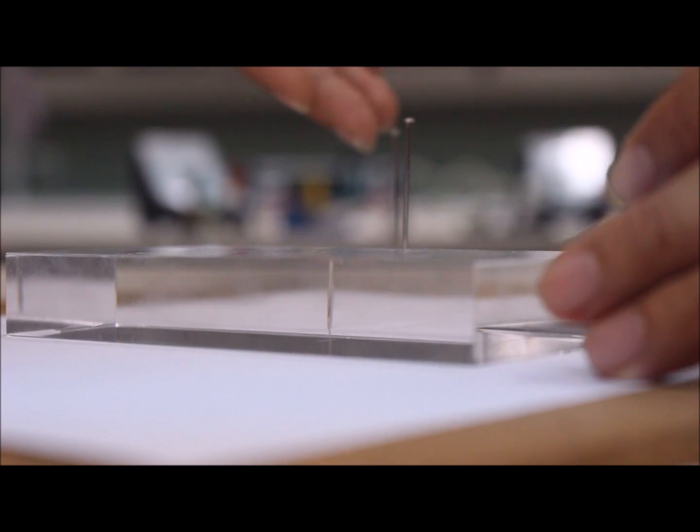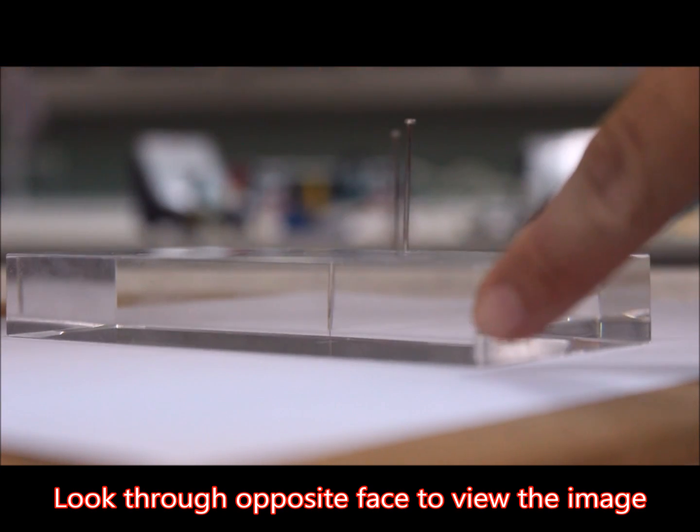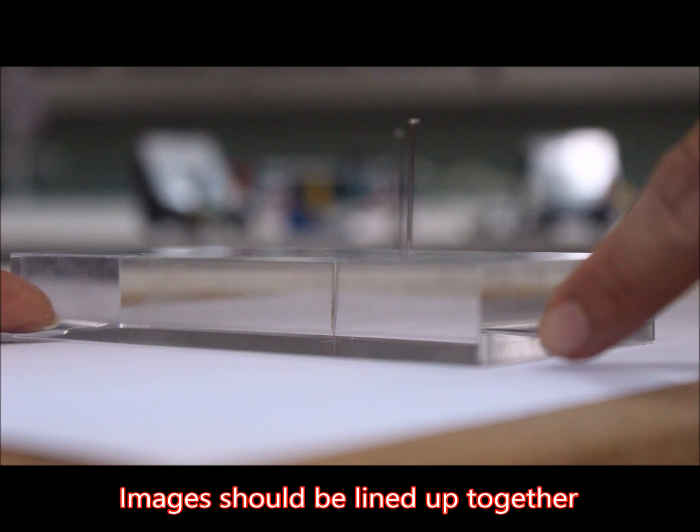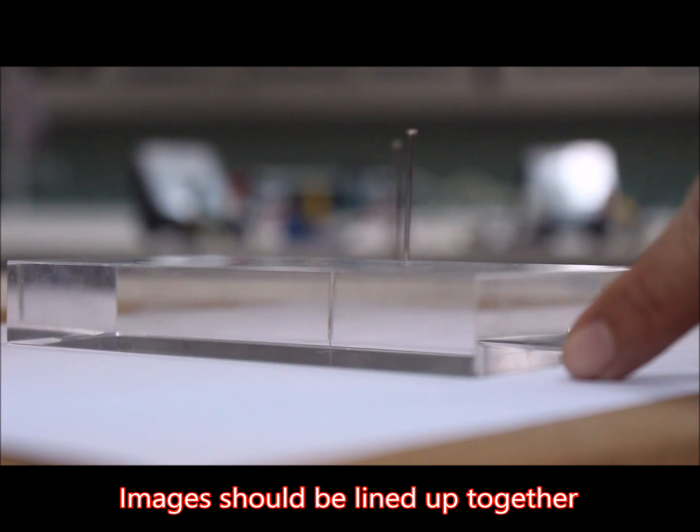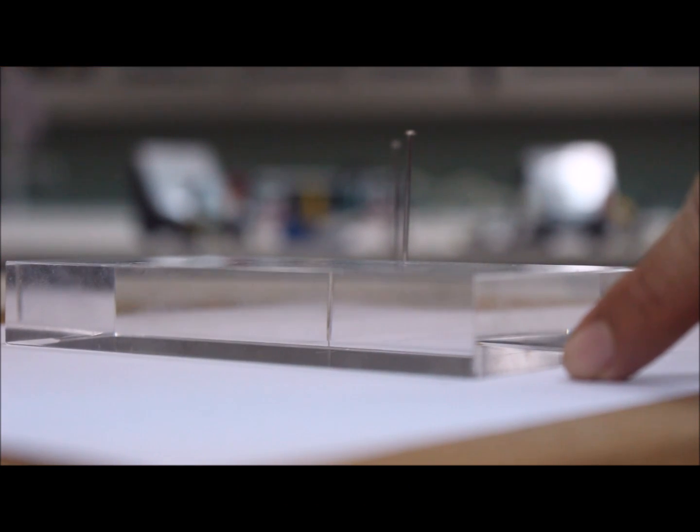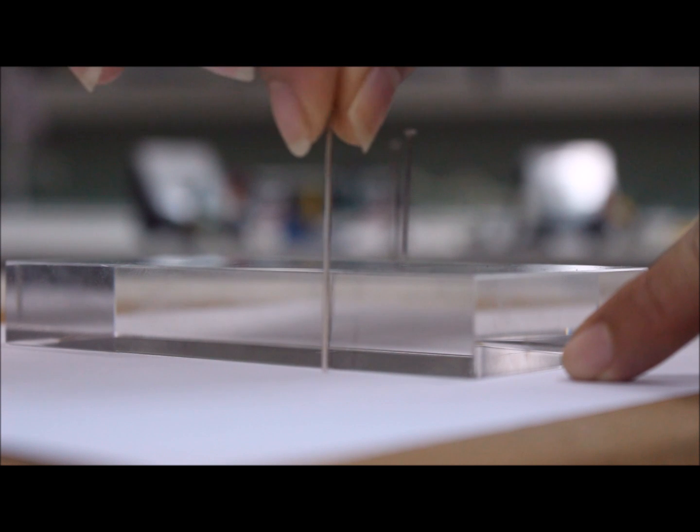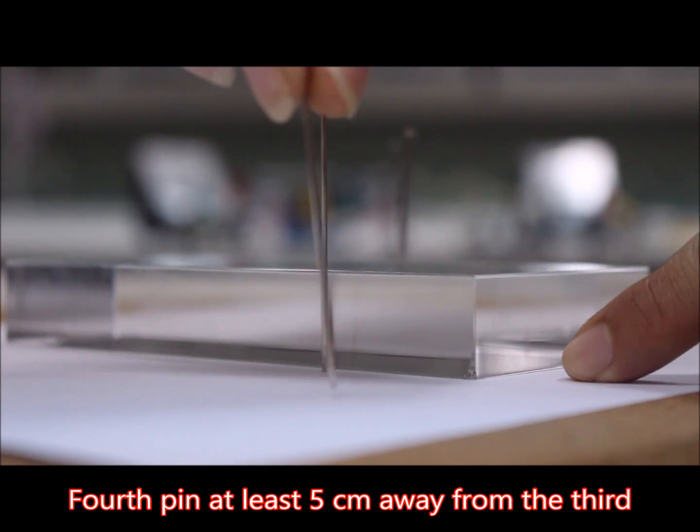When the two pins have been placed on the paper, look through this face of the glass block. Make sure that the images you see in this face line up together. Once the images line up, add your third and fourth pins.